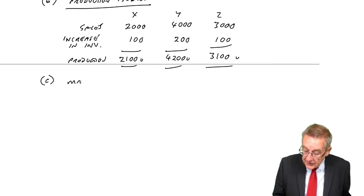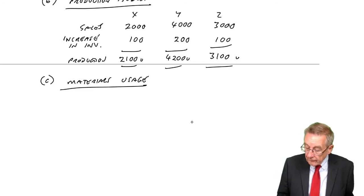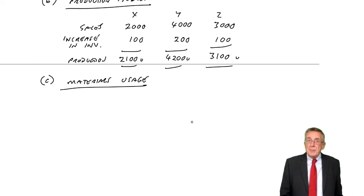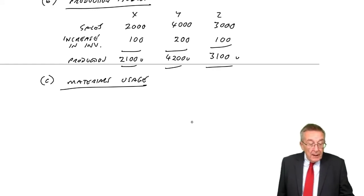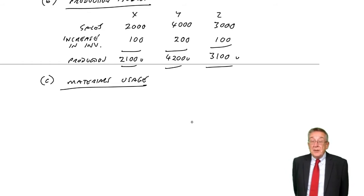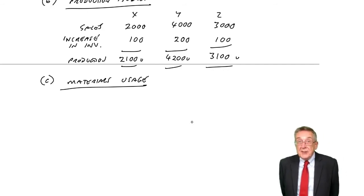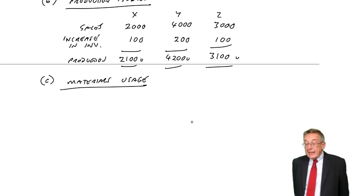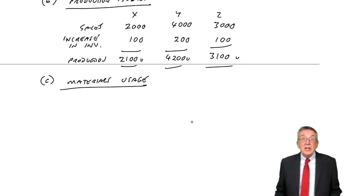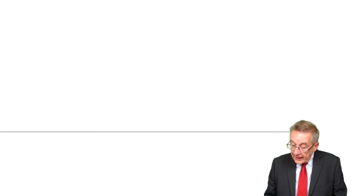C, materials usage budget. Now we know how many we're producing, we're able to work out how much materials we're going to need. The second table in the question tells us how much usage of raw material there is for each product. Product X: each unit uses 5 kilos of wood and 2 litres of varnish. Now I know what we'll produce, I can work out how much material we're going to use.